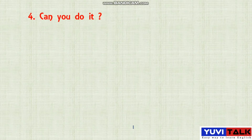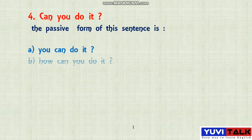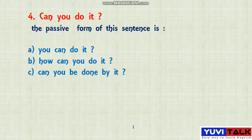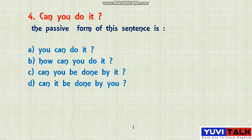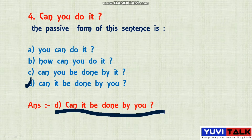Question 4: 'Can you do it?' — find the passive form. This is an active sentence. The options are: A) You can do it, B) How can you do it, C) Can you be done by it, D) Can it be done by you. The verb 'do' becomes 'done' in passive. Option D, 'Can it be done by you?' is the right answer.